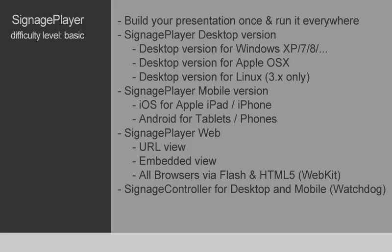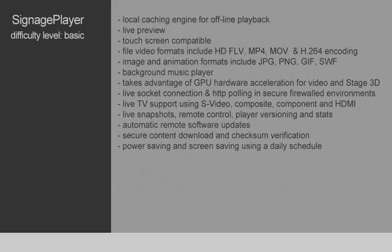If something goes wrong, the Signage Controller is always able to restart the Signage Player, so you can rest assured that all your screens will always be up and running. The Signage Player uses a local caching engine for offline playback. This means that if you lose internet connectivity at the location, the Signage Player will continue to run as-is, so there's no interruption to your audience. It also has live preview, meaning the Signage Player is embedded inside the Signage Studio so you can preview what you've built before pushing it to remote locations.